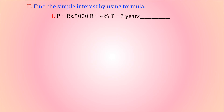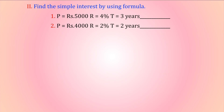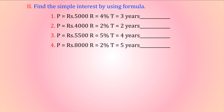Practice problems with given values: P = ₹4,000, R = 4%, T = 3 years. P = ₹5,500, R = 5%, T = 4 years. P = ₹8,000, R = 2%, T = 5 years. P = ₹3,500, R = 6%, T = 7 years.